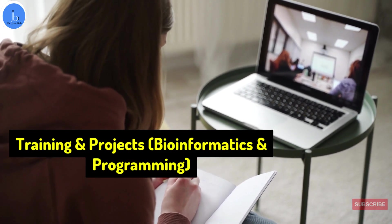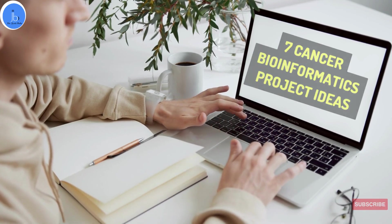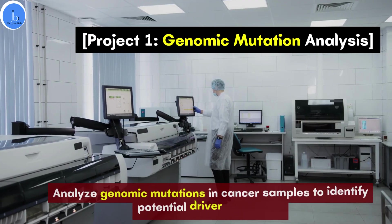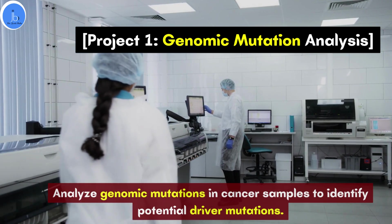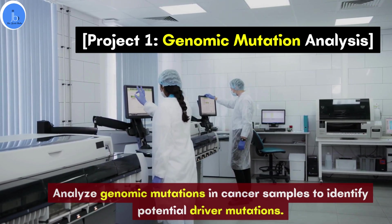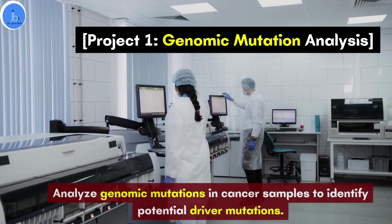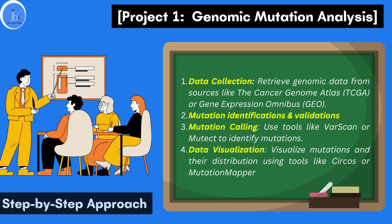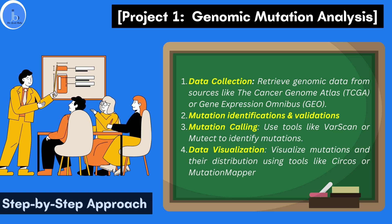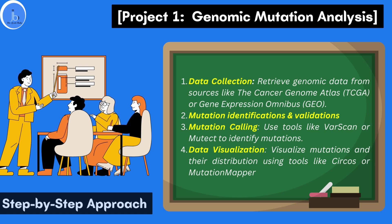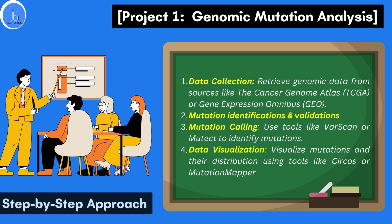Now let's explore seven exciting cancer bioinformatics project ideas especially for beginners, along with the general steps and tools required. For beginners, you can start with genomic mutation analysis — analyze genomic mutations in cancer samples to identify potential driver mutations. You can retrieve genomic data from resources like the Cancer Genome Atlas or GEO. Bioinformatics tools like VarScan and MuTect can help identify and validate mutations. Finally, you can visualize the mutations and their distribution using tools like Mutation Mapper.